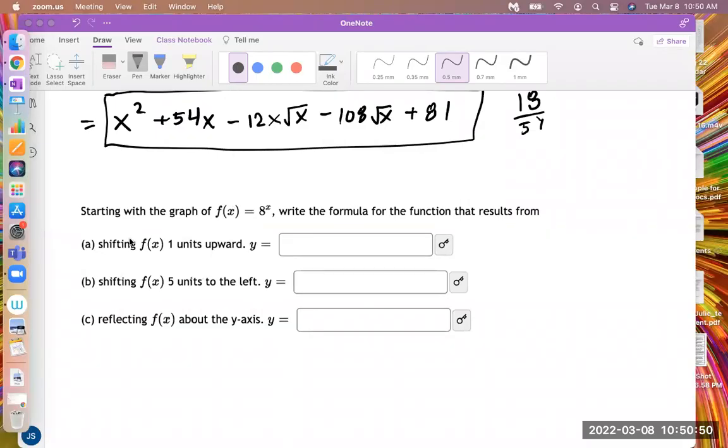Hi! I'm doing this video to help you understand transformations on equations, so let's look. Starting with the graph of f(x) equals 8 to the x, write the formula for the function that results from shifting f(x) one unit upward. So what will the resulting equation look like?